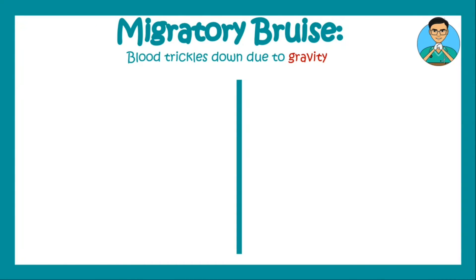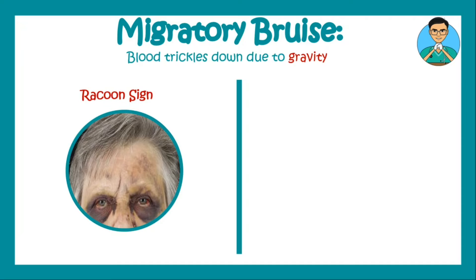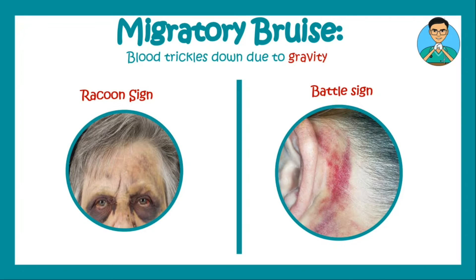There is another type of bruise known as a migratory bruise, which occurs due to trickling down of the extravasated blood due to gravity. For example, the raccoon sign: in the case of a fracture of the anterior fossa of the base of the skull, blood gets deposited in the periorbital area forming a periorbital bruise. Similarly, you can have a Battle's sign when the middle or posterior cranial fossa gets fractured. As blood trickles down to where it can settle due to gravity, it is known as a migratory bruise.